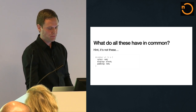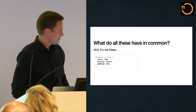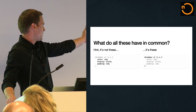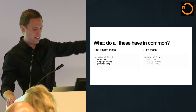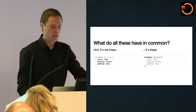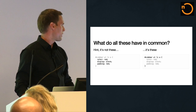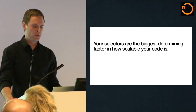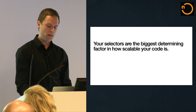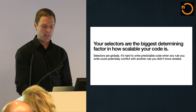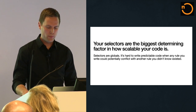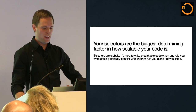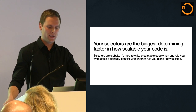So what do all of these things have in common? CSS is not hard because of the properties and values — people like to complain about that, but that's not what makes it hard. What makes it hard is the selectors. Your selectors and how well they're written is by far the biggest determining factor in how scalable your code will be. Because selectors are effectively global variables. It's incredibly hard to write predictable code when any rule you write could potentially conflict with other rules on the page — rules that may not be there right now, rules you don't know exist.